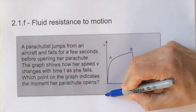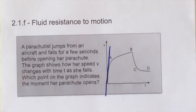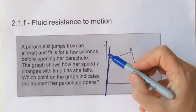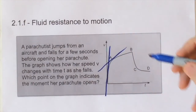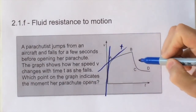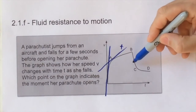To answer a question like this we need to be able to interpret the graph, and we draw tangents at various points on the graph to analyze it. The steepest first line is the acceleration due to gravity which the object initially has. The second acceleration is still positive but much less because there is a resistive force now from the drag on the parachutist.